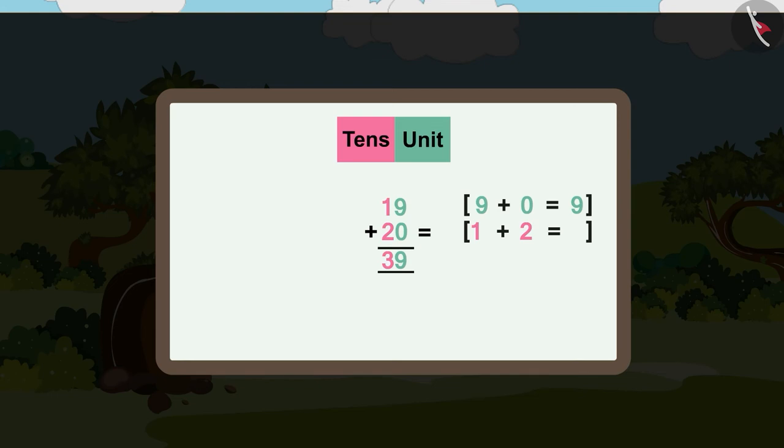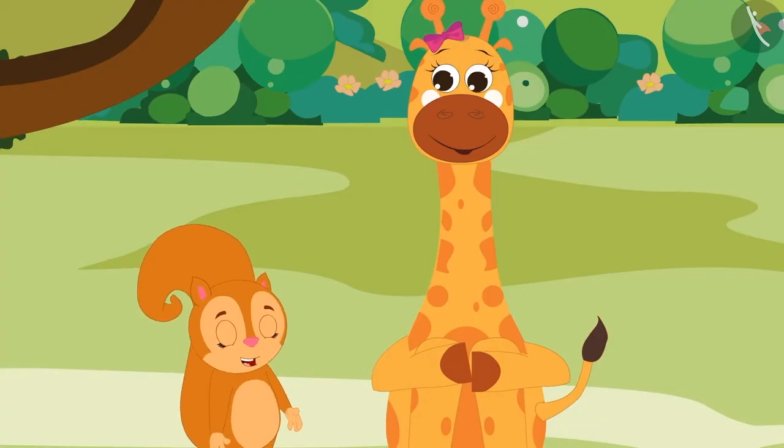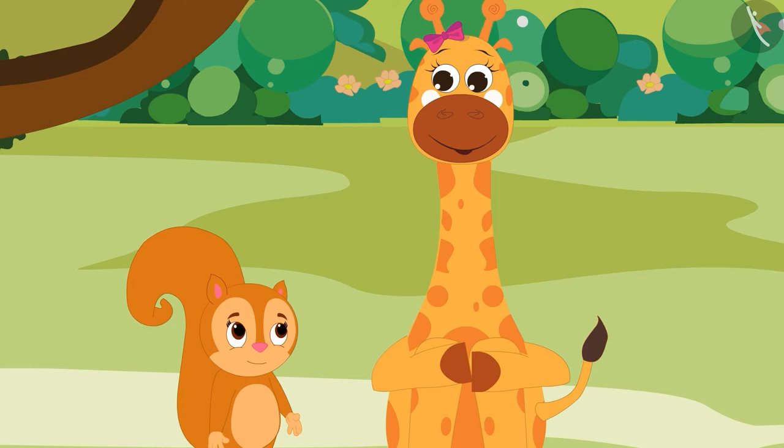1 plus 2 is equal to 3. You need to buy 39 chocolates. Both of them got happy and went together.